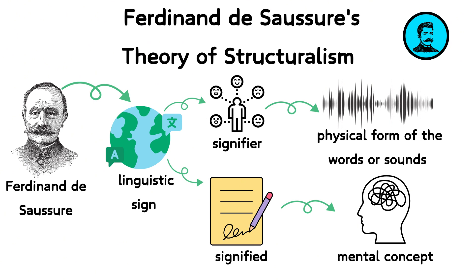The signifier is the form that the sign takes — the physical form of the words or sounds as we perceive them. The signified, on the other hand, is the mental concept that the signifier refers to. Saussure's insight was that the relationship between signifier and signified is arbitrary; there is no inherent connection between them, but rather a social agreement.